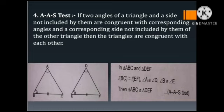Number 4: AAS test — that means Angle-Angle-Side test. If two angles of a triangle and a side not included by them are congruent with the corresponding angles and the corresponding side not included by them of the other triangle, then the triangles are congruent with each other. In triangle ABC and triangle DEF: length of BC equals length of EF, angle A is congruent to angle D, angle B is congruent to angle E. Therefore, triangle ABC is congruent to triangle DEF. It is the AAS test.